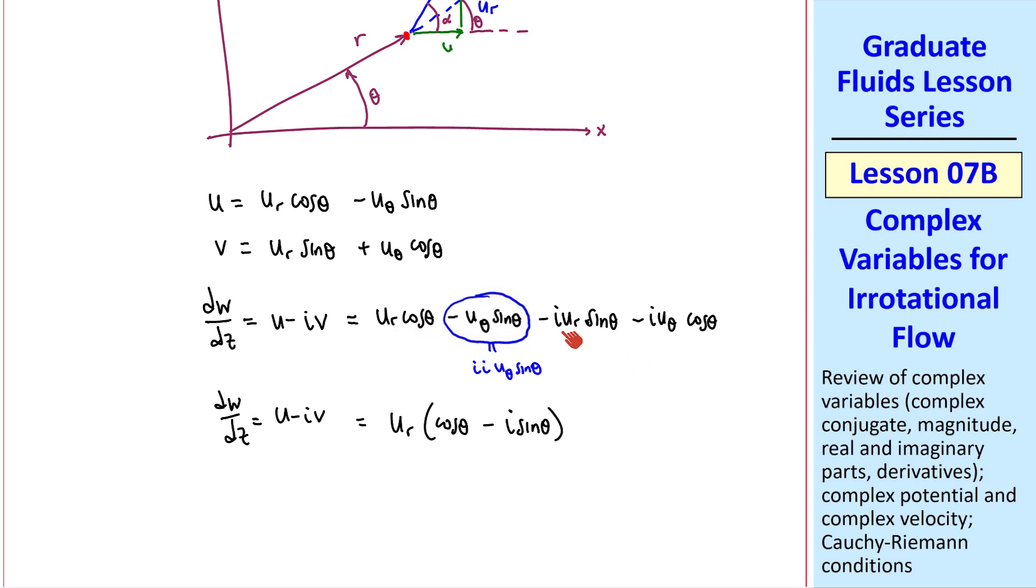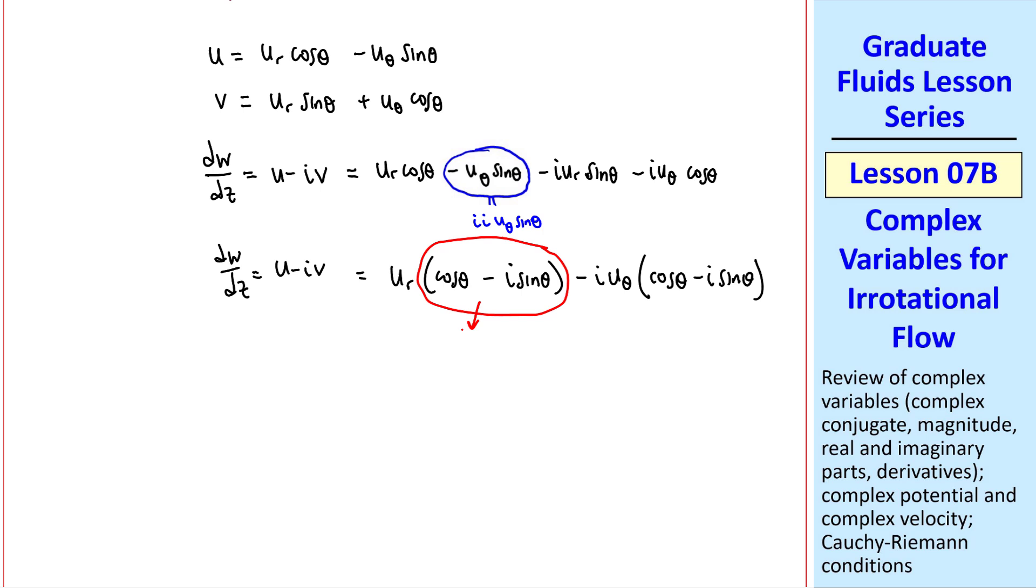And then the terms with a minus iu theta, namely cosine theta from here. And one of these i's, minus i sine theta from here. But cosine theta minus i sine theta is e to the minus i theta. And we see the same term here.